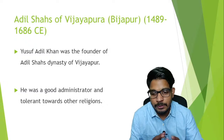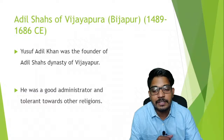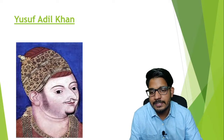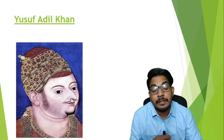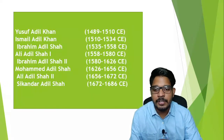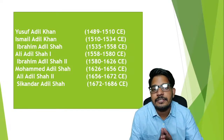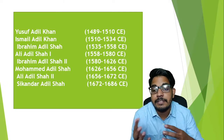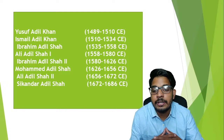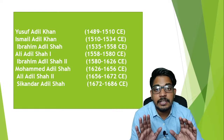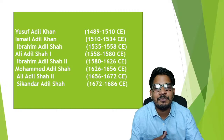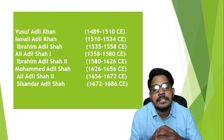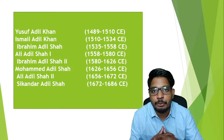Yusuf Adil Khan was the founder of the Adil Shahs of Vijapur. The list of rulers under this dynasty includes Yusuf Adil Khan, Ismail Adil Khan, Ibrahim Adil Shah I, Ali Adil Shah I, and Ibrahim Adil Shah II. Among all the sultans of Vijapur, Ibrahim Adil Shah II stands out because of his tremendous contribution in expanding the territory and prosperity of the kingdom.